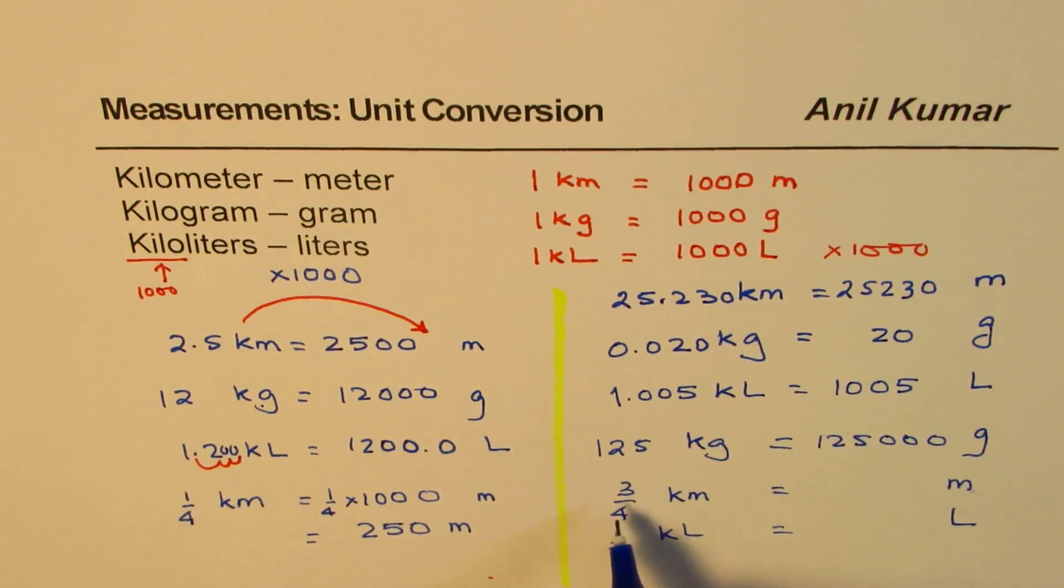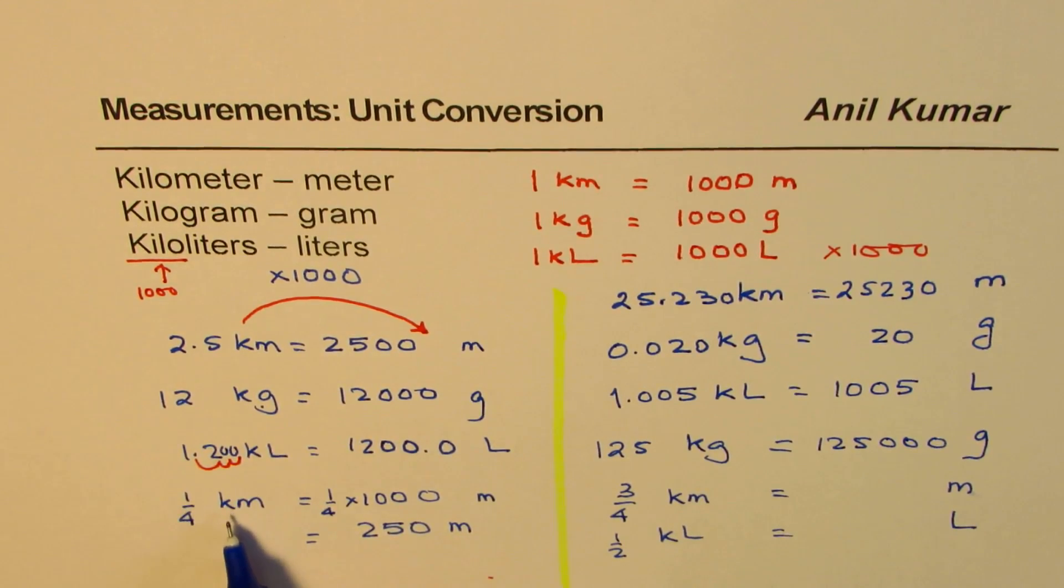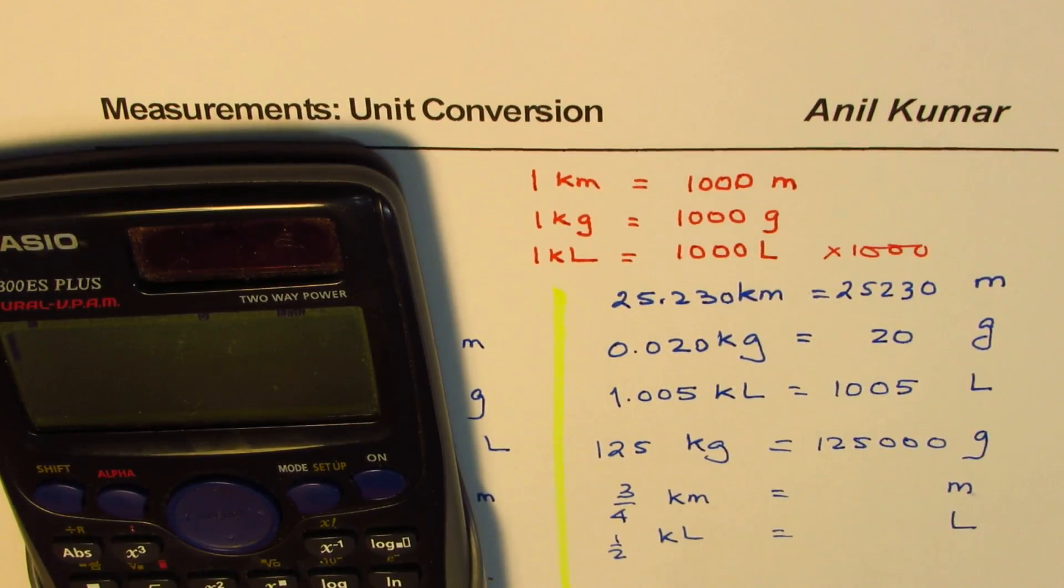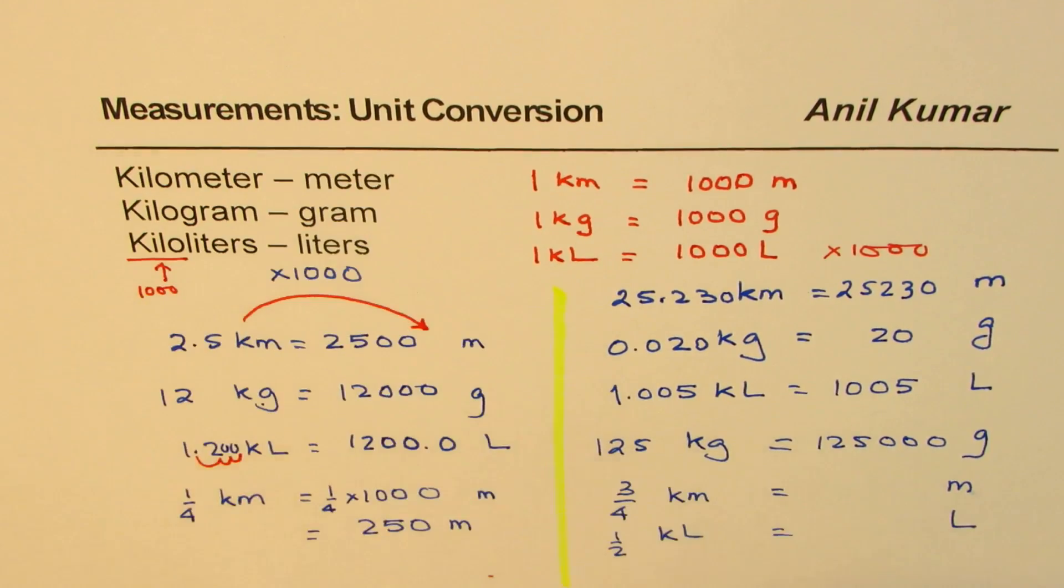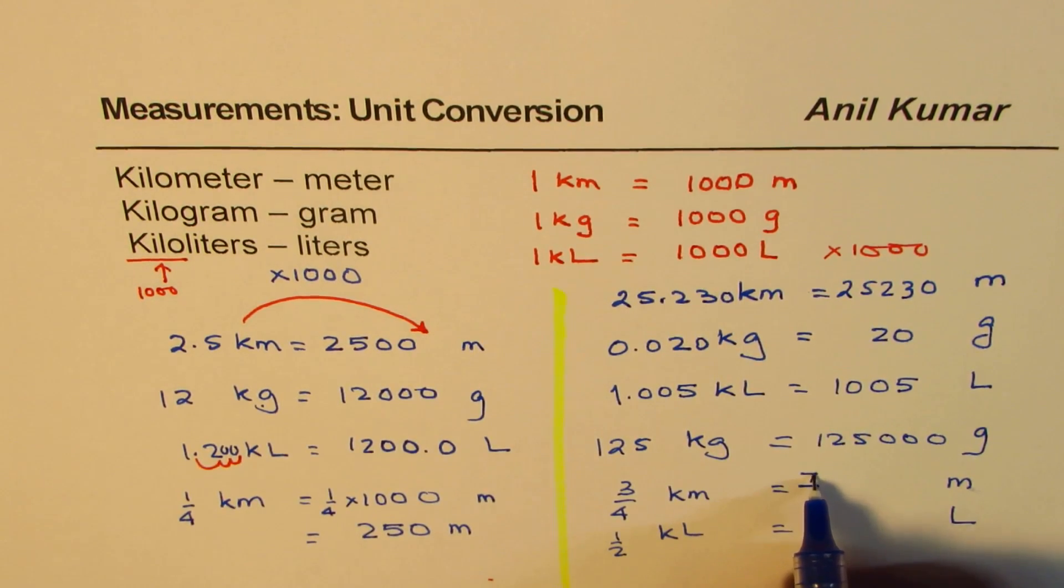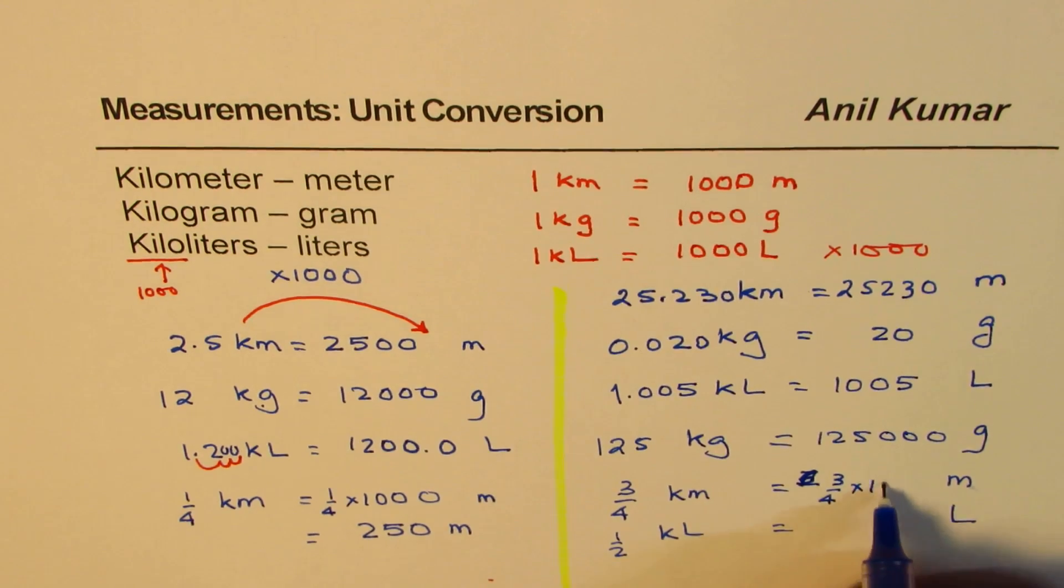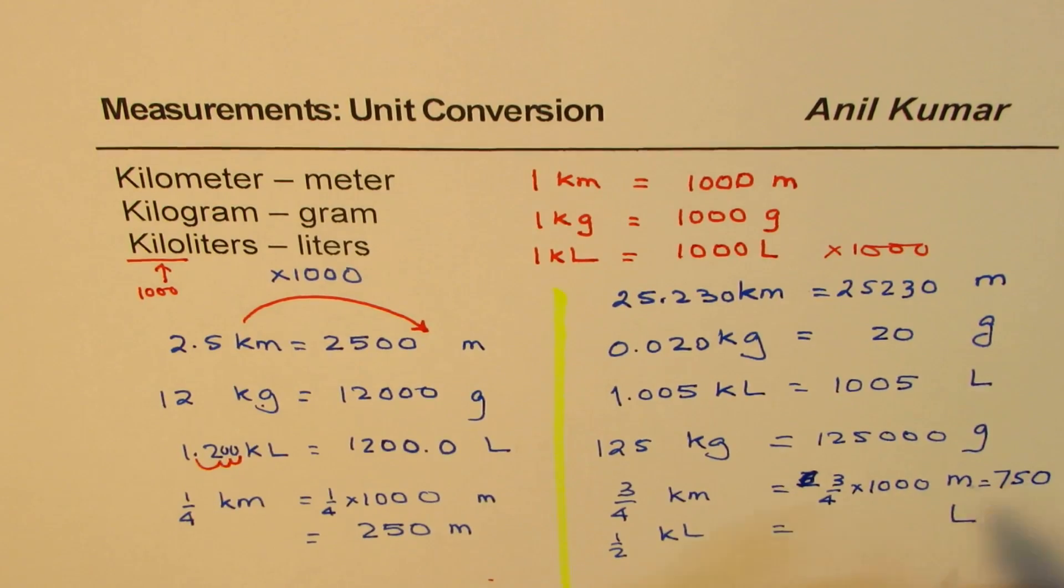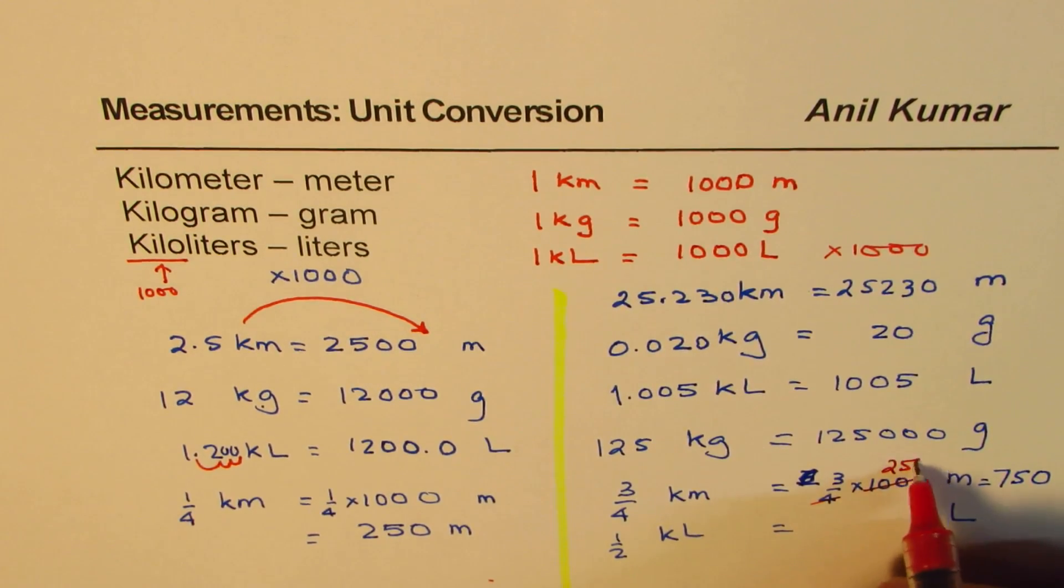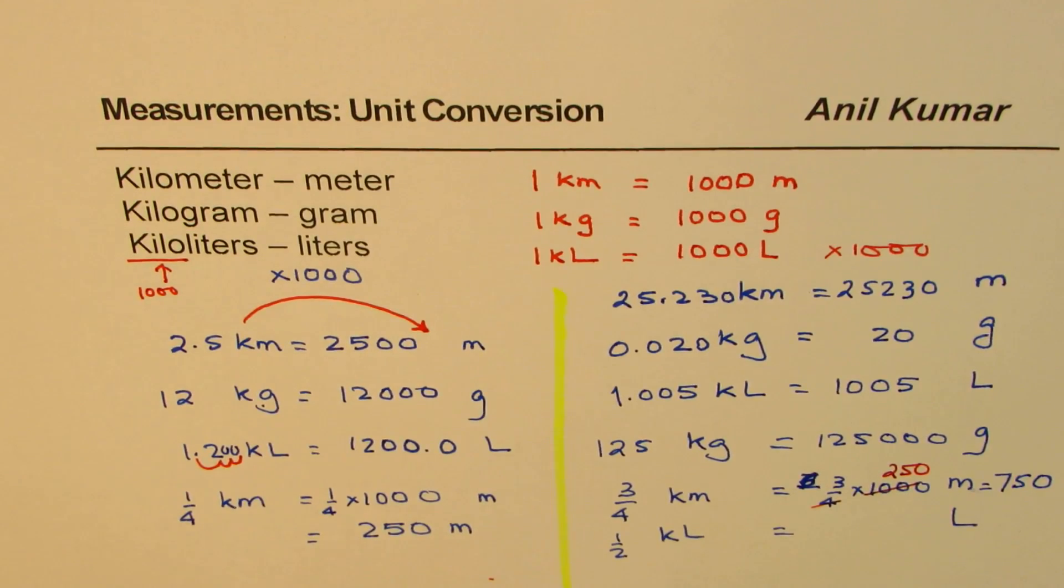3 by 4th of 1,000, we know it is 250. So you can multiply by 3, divide by, let's use calculator. So we'll do 3 times 1,000 divided by 4, right? So 750. You can use calculator. So 3 over 4 times 1,000. So when you use calculator, you get 750, correct? That is how you could do it. Or you could simplify. That goes 250 times. And 3 times 250 is 750. You could do like that.